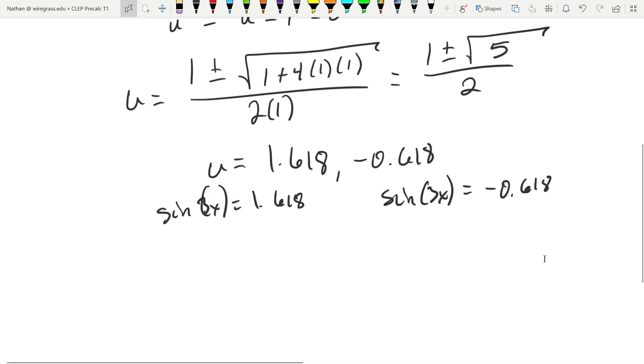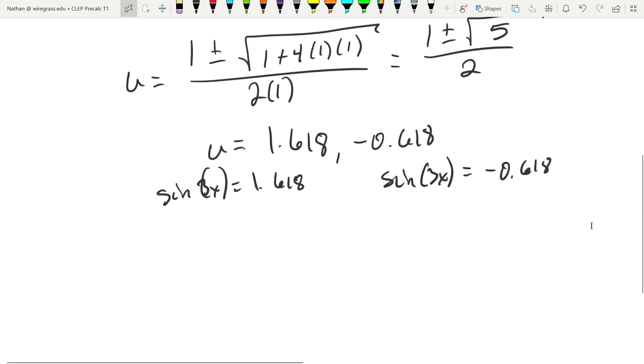We need to do the arc sine and then divide by 3. So doing the arc sine first, let's see what we get. Taking arc sine of 1.618, which doesn't work because it's over 1.